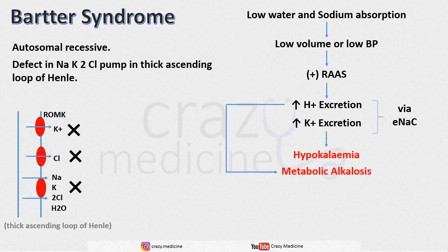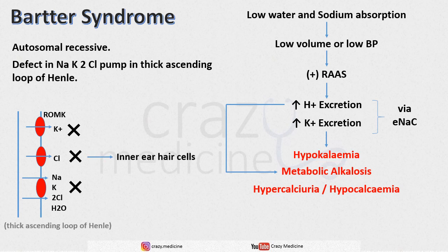As discussed previously, this pump is also responsible for the voltage gradient for calcium absorption, so there will be increased urinary loss of calcium — i.e., hypercalciuria — which will cause hypocalcemia. The chloride channel is also present in inner ear hair cells and is also affected, which will cause sensorineural hearing loss. The drug of choice for Bartter syndrome is indomethacin; steroids are also used in treatment.